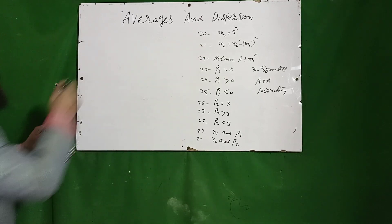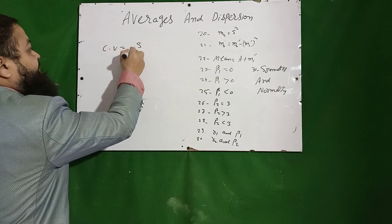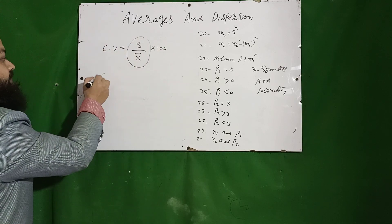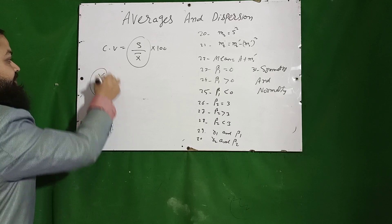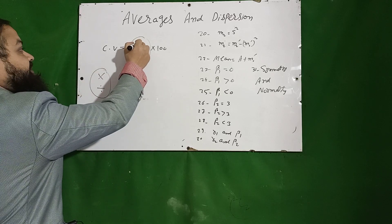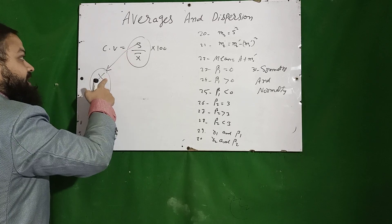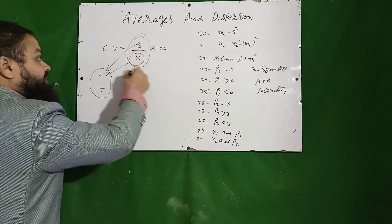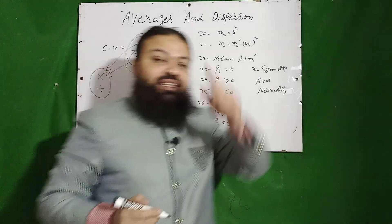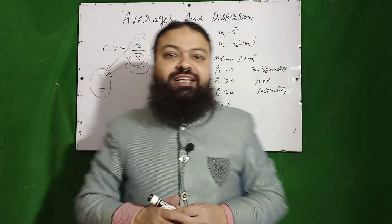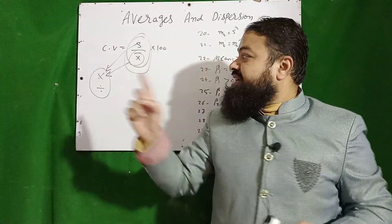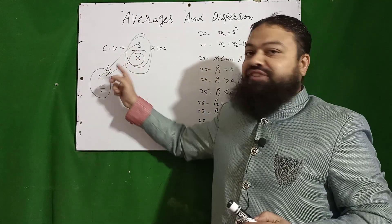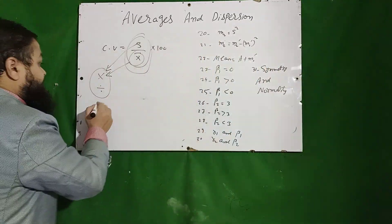The formula for coefficient of variation is: s divided by x̄, multiplied by 100. In multiply/divide: standard deviation s is affected by multiplication, and x̄ (mean) is also affected by multiplication, so these effects cancel out — that is why coefficient of variation is not affected by multiply and divide. It is independent of change of scale.